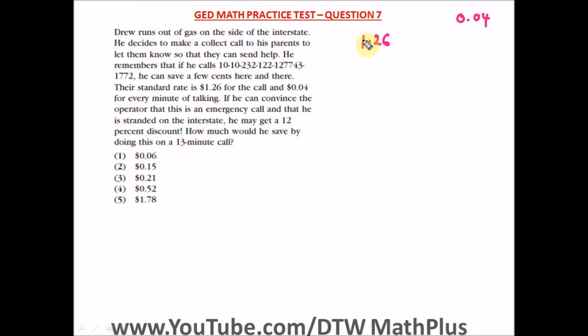The standard rate first is $1.26 plus it's a 13-minute call, so this would be $0.04 times 13. So for the 13 minutes, it would be $0.04 times 13 because it says $0.04 for every minute of talking, so it would be this times 13 minutes.